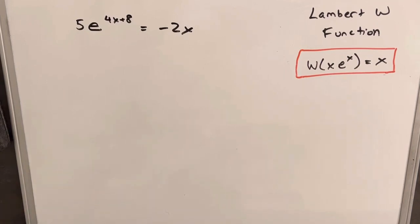Hey, so we have a problem on the board. 5e to the 4x plus 8 equals minus 2x, and we want to solve this using the Lambert W function.